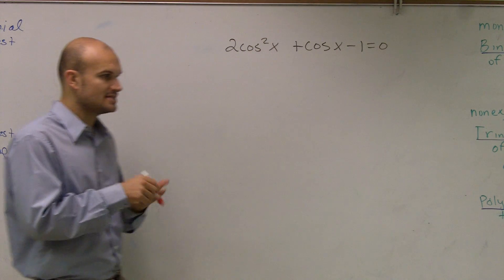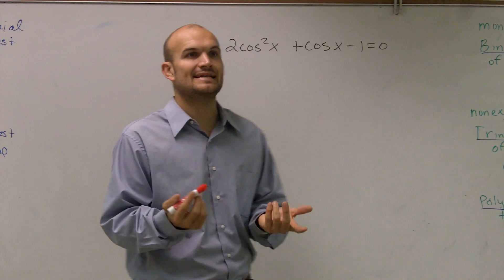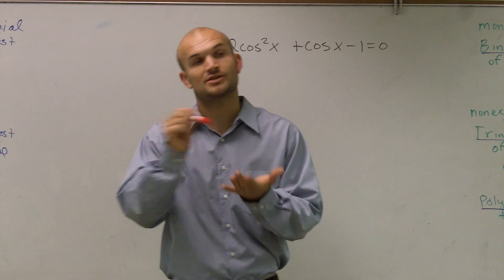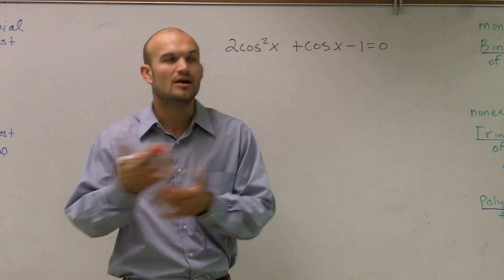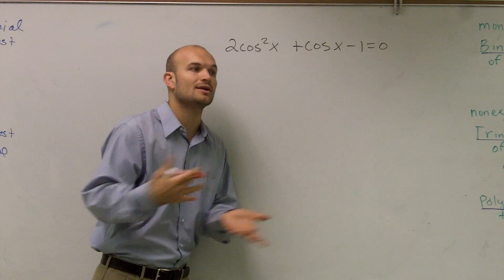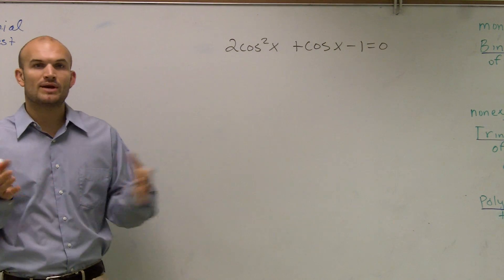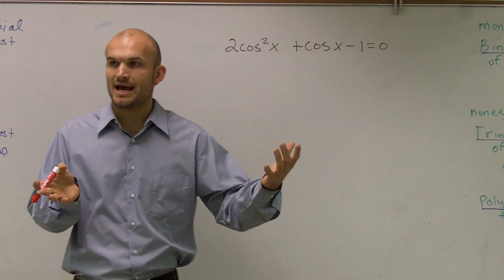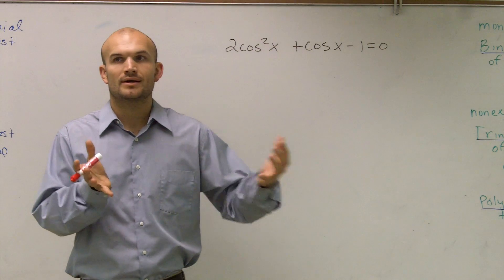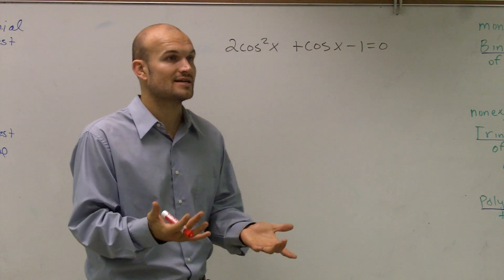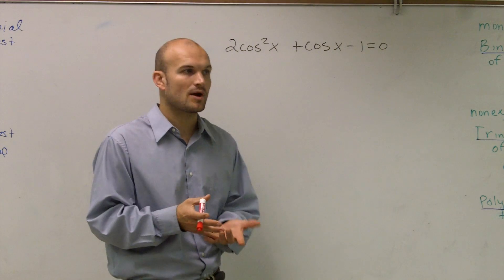When we just had one variable x, it was very easy just to undo your operations. You undid addition and subtraction, undid multiplication, undid squaring. Whatever was happening to the variable, you undid it. But whenever we had two variables, we had to get some way to get them by ourselves. So what we did was we looked into factoring techniques to use the zero product property.